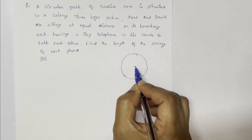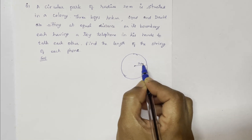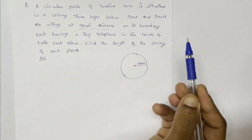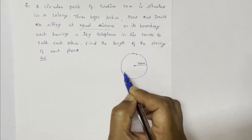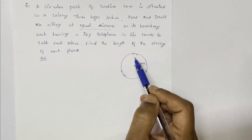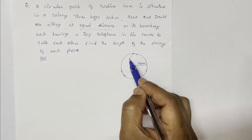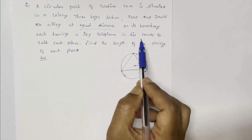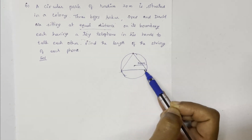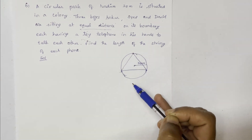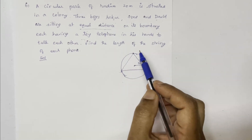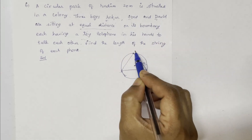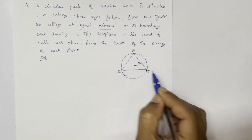One circular park with radius 20 meters. Three boys are located on the circle at equal distances. If you join them, they form an equilateral triangle inscribed in the circle. The toy telephones are connected with string wire and thread. We calculate the length by naming the boundary points and marking the center.